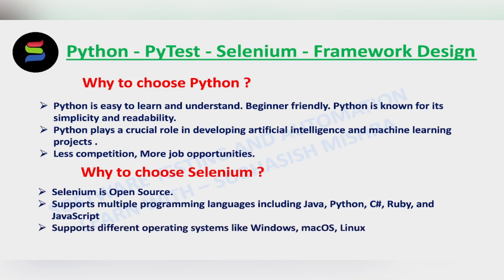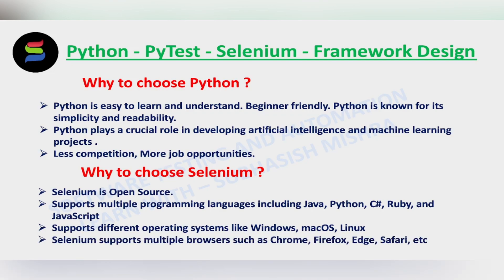Platform independence is another advantage. Selenium WebDriver, which is a core component of Selenium, allows automation of web applications across different operating systems like Windows, Mac OS, and Linux without any modification to the underlying automation scripts. Selenium also supports multiple browsers such as Chrome, Firefox, Edge, and Safari. This is crucial for ensuring your web applications behave consistently across different browsers. There are many other advantages like Selenium's extensive community support and integration with CI/CD. We will see all these things in our future lectures.